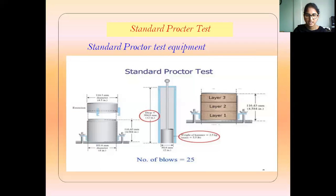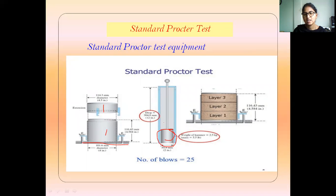This is the standard compaction equipment. It consists of a mold with a collar placed on top of the mold. At the base of the mold, there is a base plate connected between the mold and the plate, so the soil will not come out during compaction. The weight of the hammer is 2.5 kg.